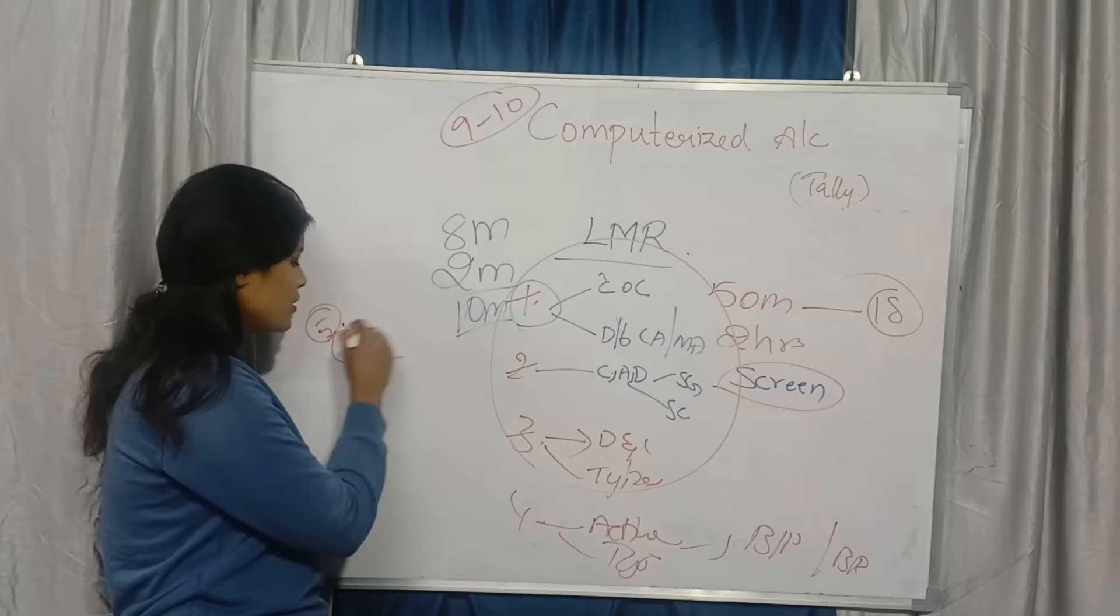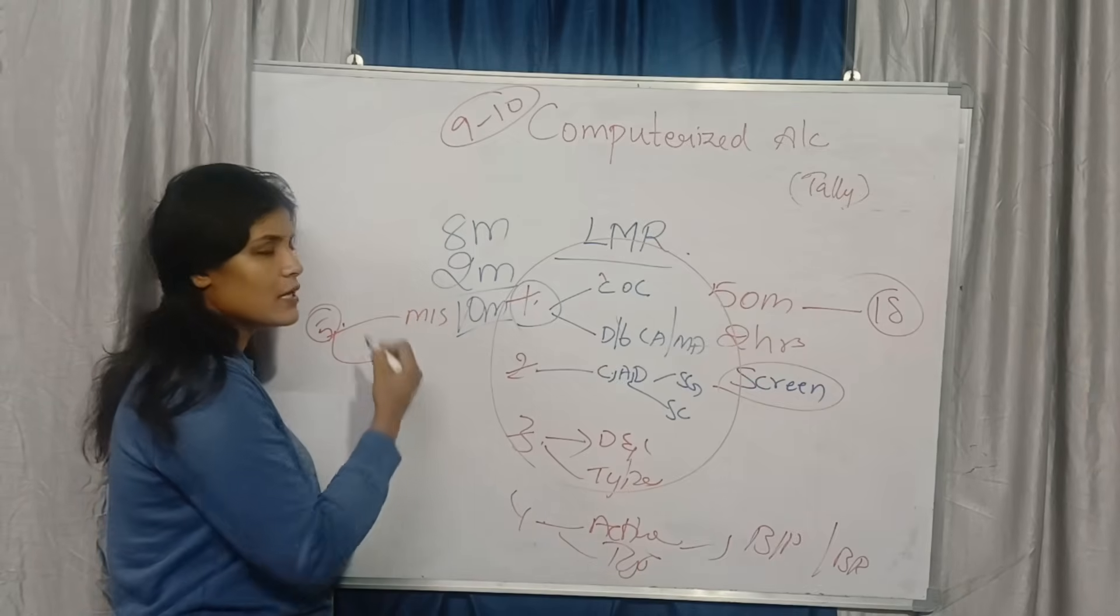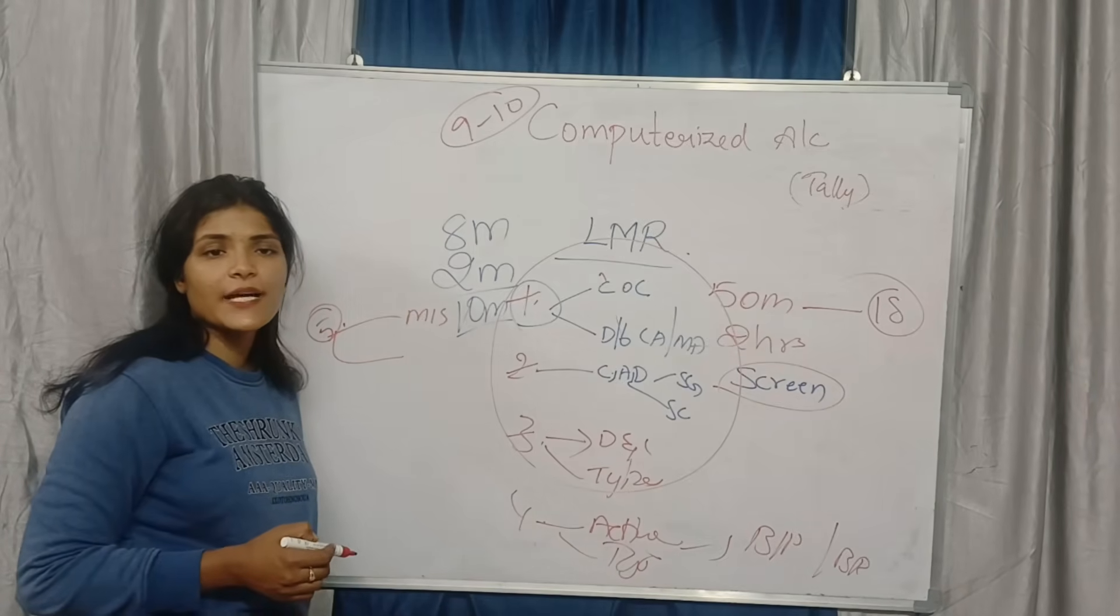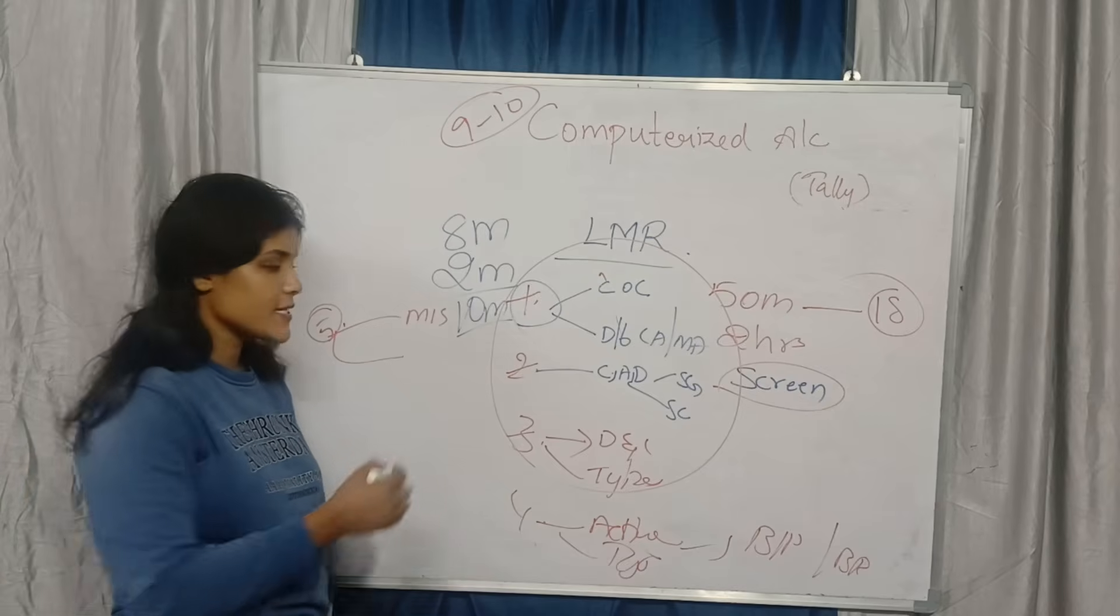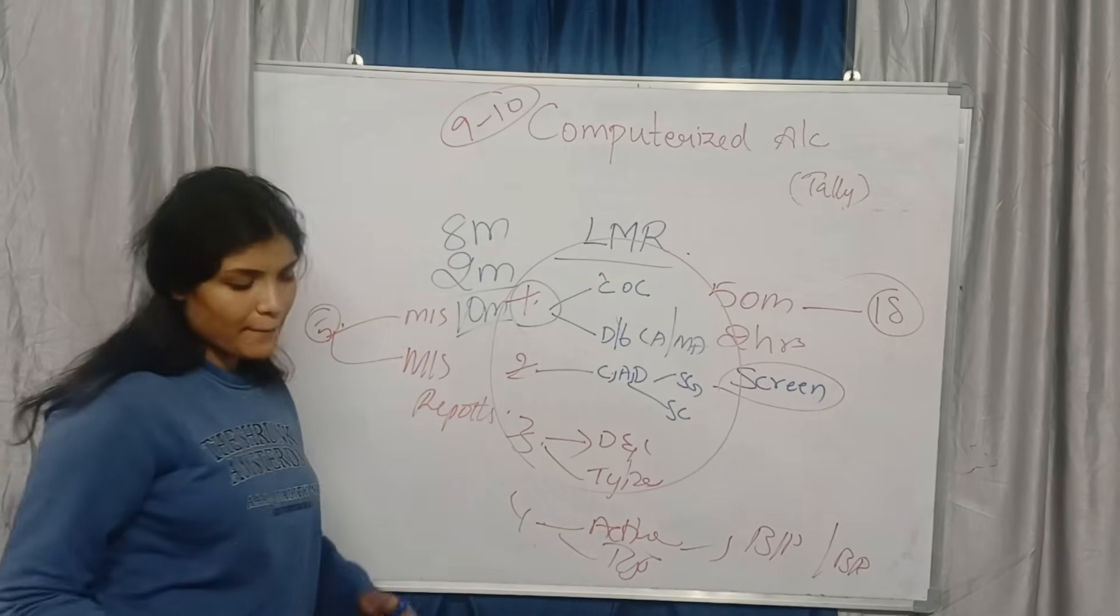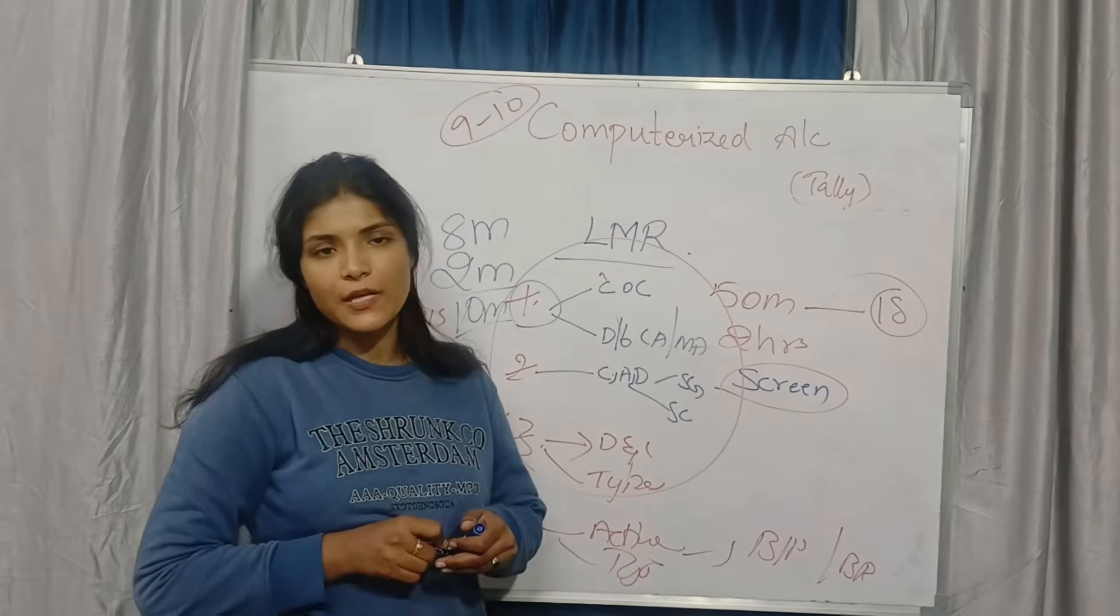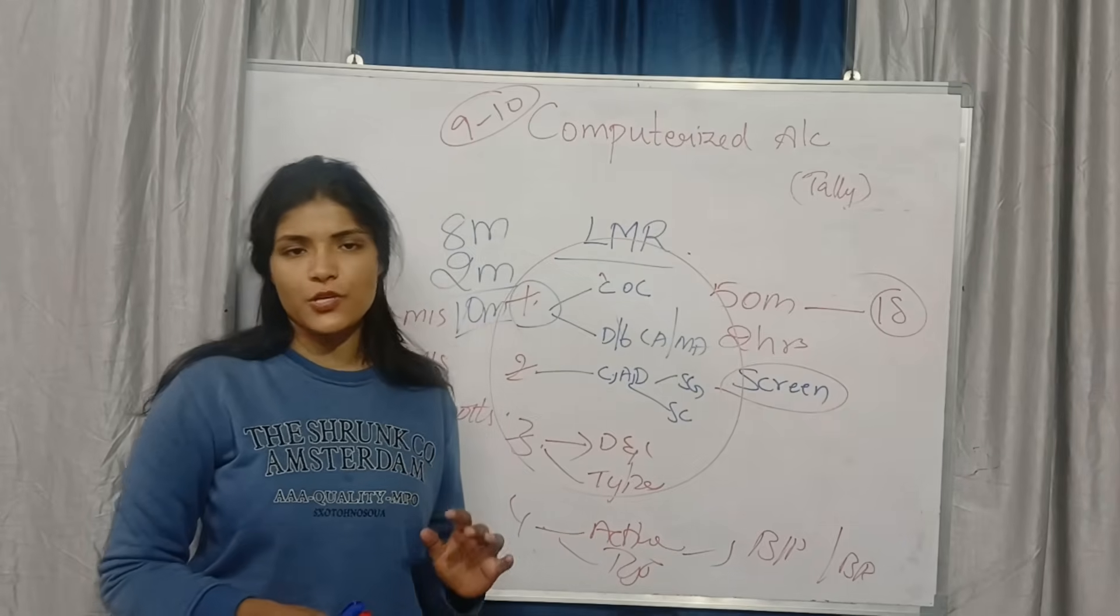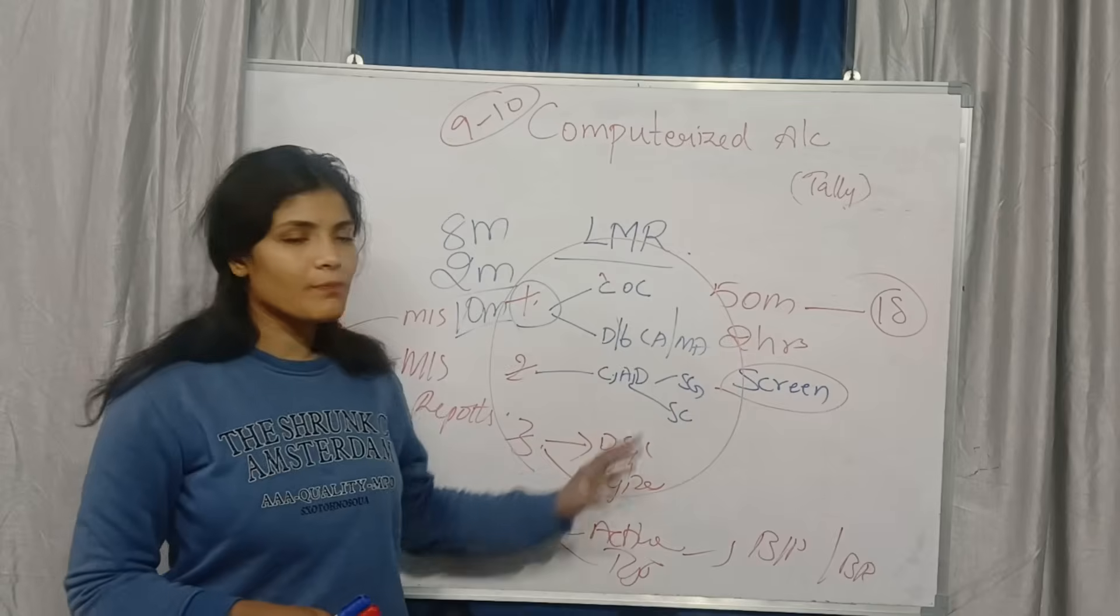And from unit number 5, there are 2 reports. MIS - what is mean by MIS? Management Information System. What are its advantages and disadvantages? Second one is MIS reports. What are the different types of MIS reports you are having? Out of these 2 questions, 1 question will be in your question paper, that is for sure.